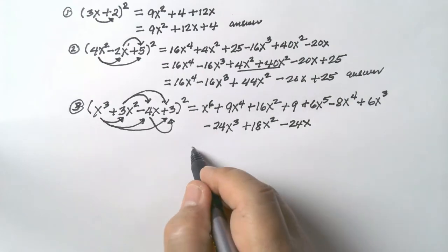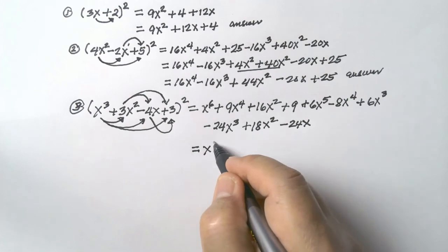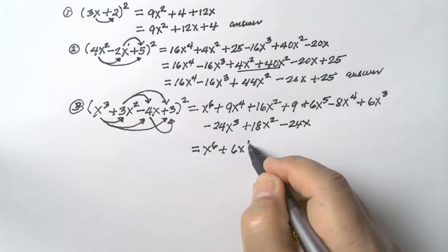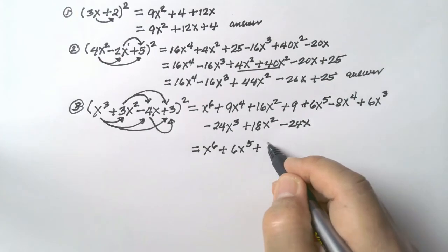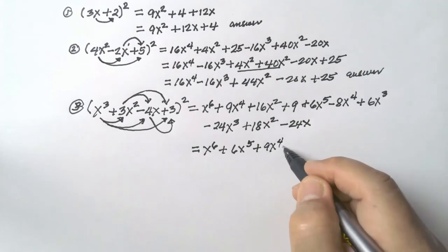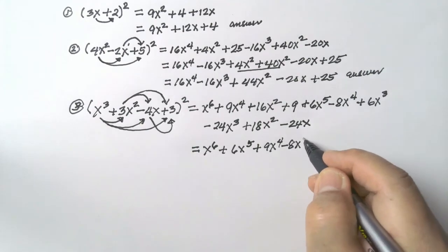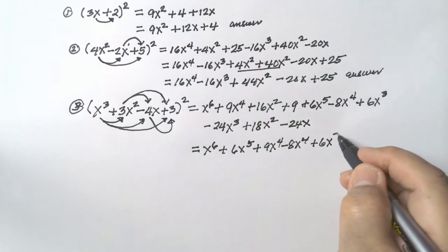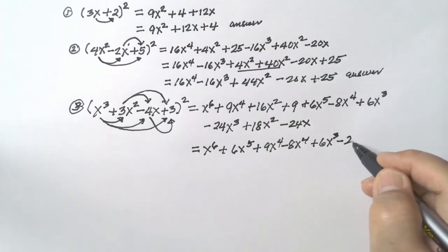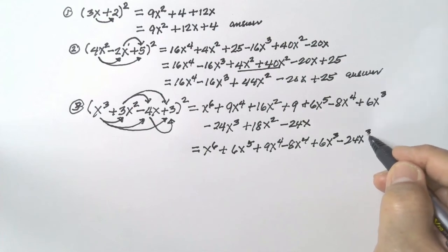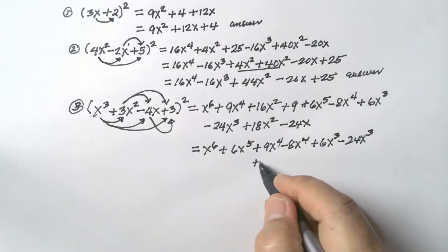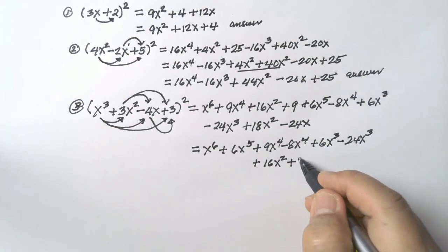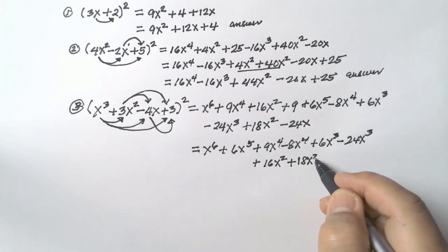Arrange the terms: x to the exponent of 6, plus 6x to the exponent of 5, plus 9x to the exponent of 4, minus 8x to the exponent of 4, plus 6x cubed, minus 24x cubed, plus 16x squared, plus 18x squared.